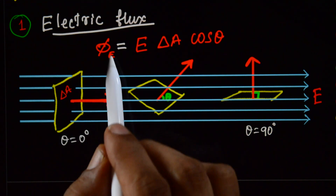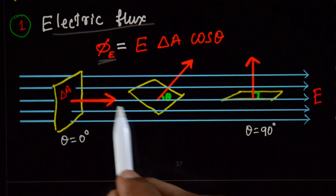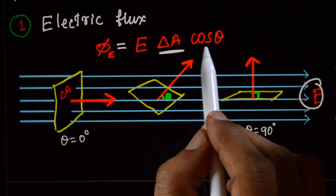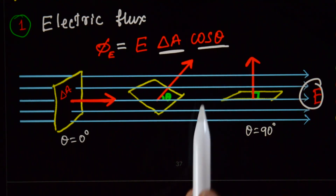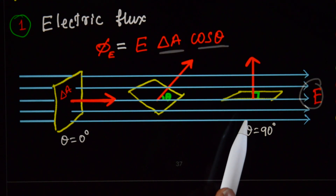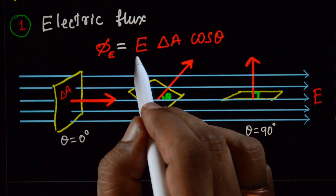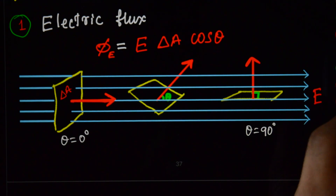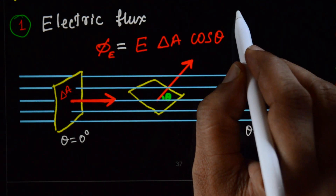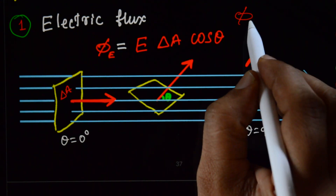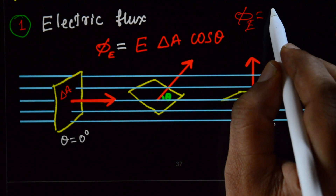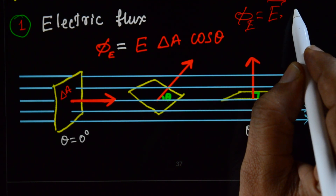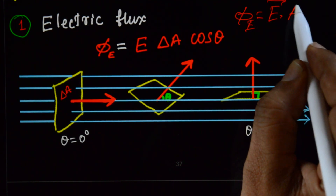Flux is equal to electric field times area times cos theta. Or, that is the dot product of electric field and area times cos theta. You can also express electric flux as the dot product of electric field and the area vector.